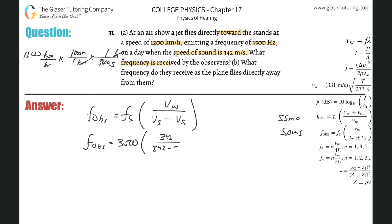The frequency the observers will be experiencing is 342 divided by 342 minus 333.3, which comes out to about 39, then multiply by 3500. This gives us a very high frequency of about 1.38 times 10 to the 4th hertz.